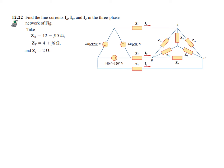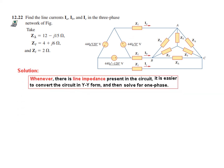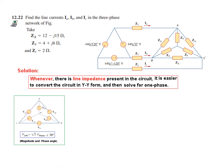Finally, we do problem 12.22. This looks more difficult — one load is Delta connected and the other is Y connected. We need to find line currents IA, IB, and IC for the combined load, and there is also a line impedance given. The voltage source is in delta mode. My observation: whenever a line impedance is present, it is easier to convert the entire circuit into YY form and then solve for one phase.